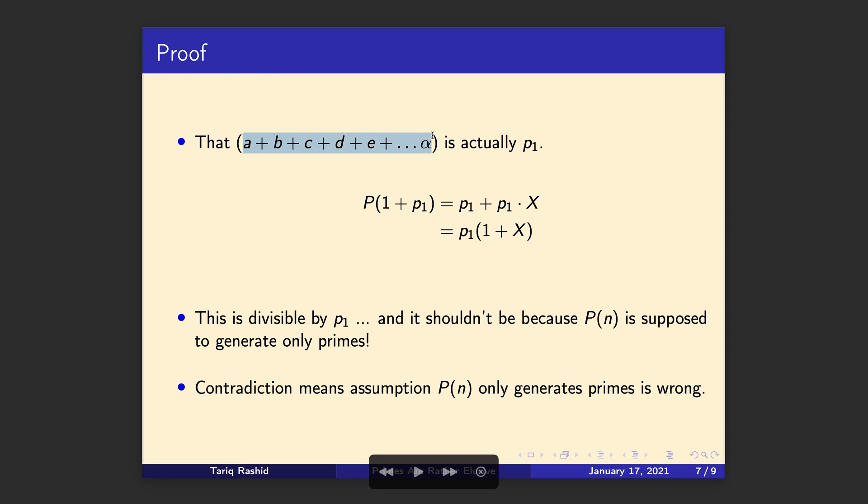So we're just saying here that that first bit is actually P₁. So we can say that when (1 + P₁) is plugged into that polynomial, it's P₁ plus P₁ times x. And we can factorize that as P₁(1 + x). We found that that polynomial generates a number which is P₁ times something. P₁ times something can't be prime. Something times something can't be prime. So that's a contradiction.